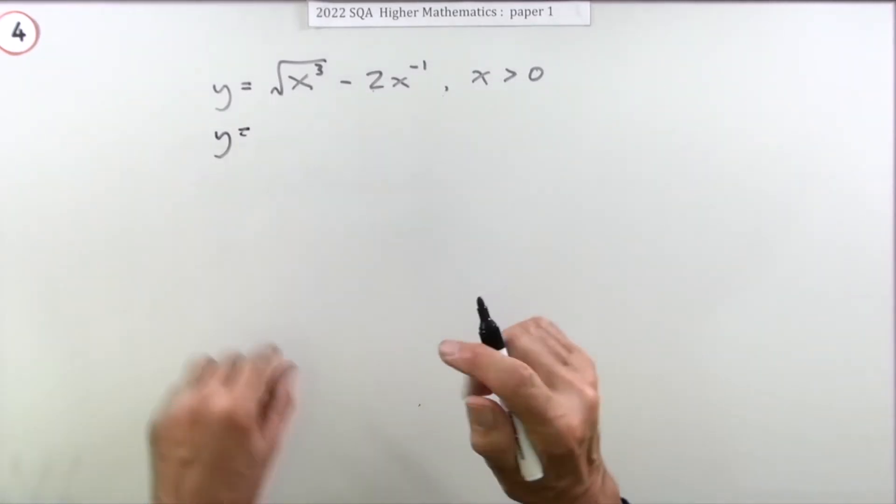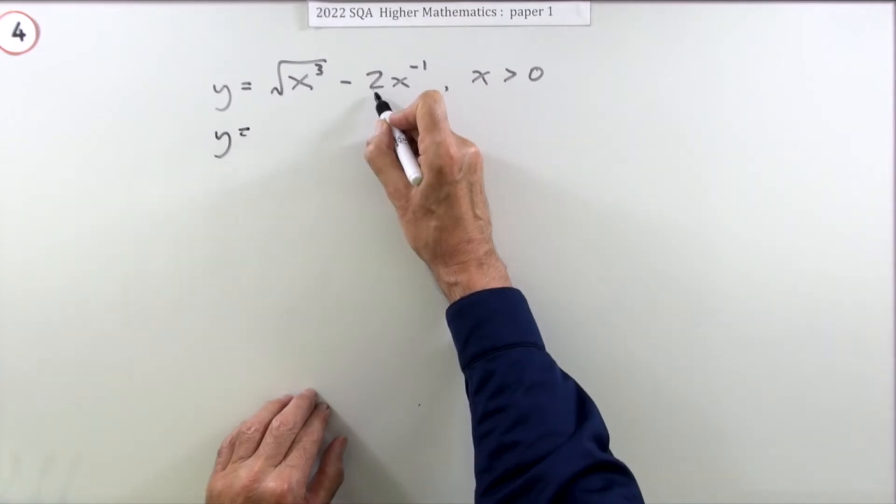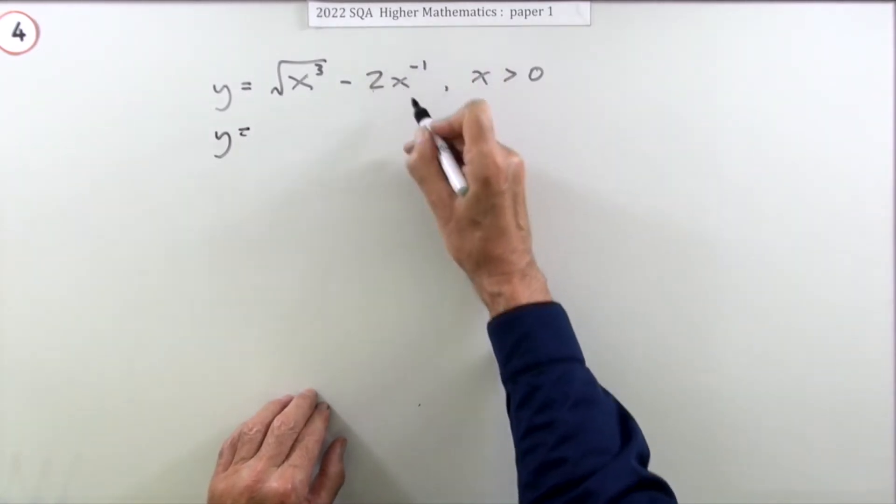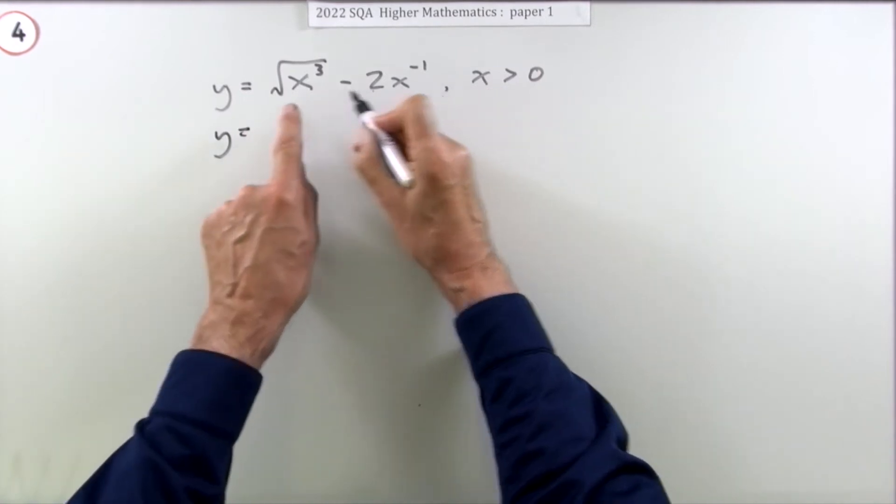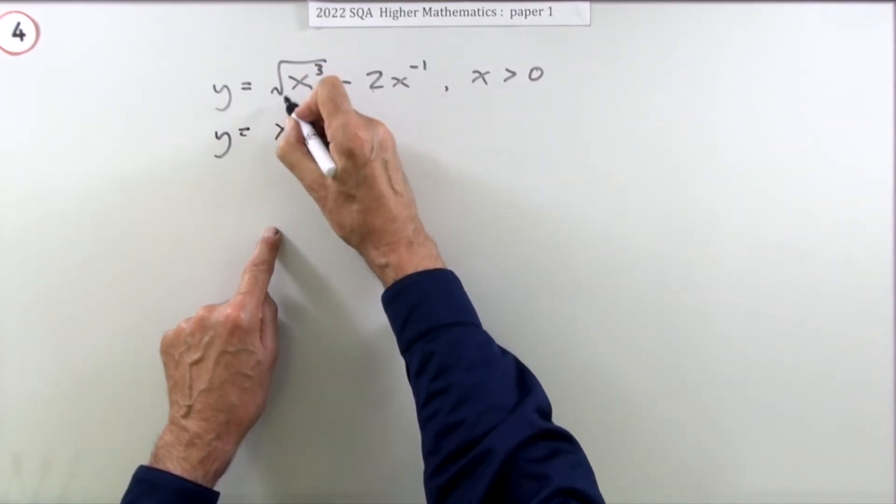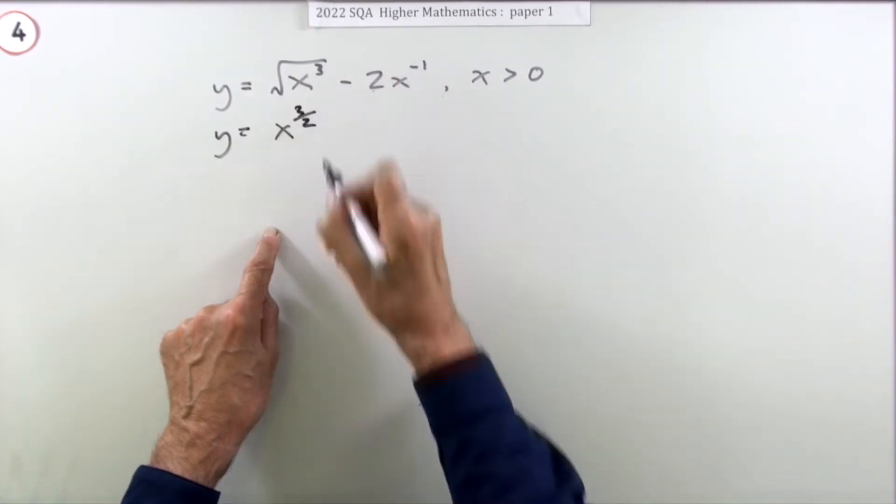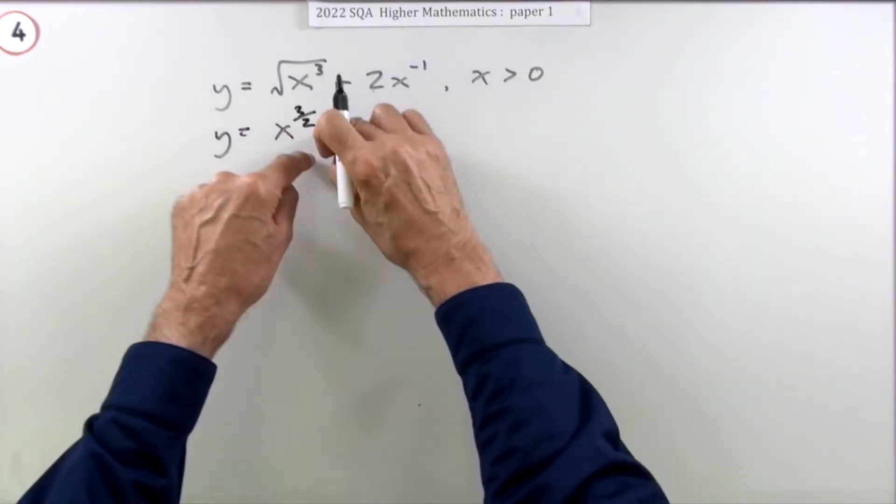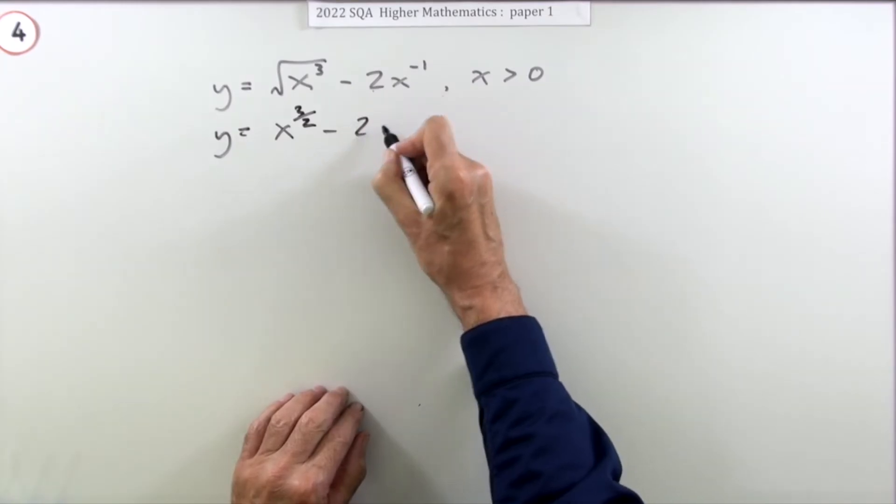And each term has to explicitly show the coefficient and the index, just call that the power. So that term's fine. This term's not. I need to rewrite that. I know the power, but that square root has to be rewritten as upon 2. The roots go down below. This term's fine.